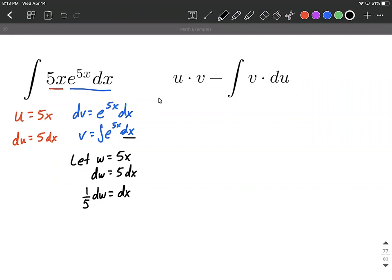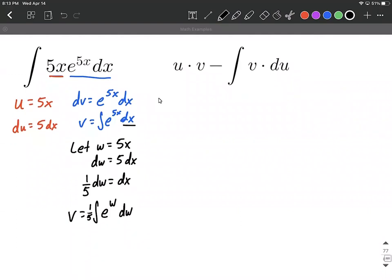That'll isolate the dx on one side by itself. So thinking about v still, we're taking the integral of e to the w power. We can replace the 5x with w because that's what we let w equal. And then the dx, we're going to replace that with 1/5 dw. Finally taking the antiderivative here, the antiderivative of e to a power is just e to that power. I'm going to leave off the plus c for right now. But to finish this up, we're going to replace back in with w equals 5x. And we'll say that's the antiderivative of e to the 5x dx.